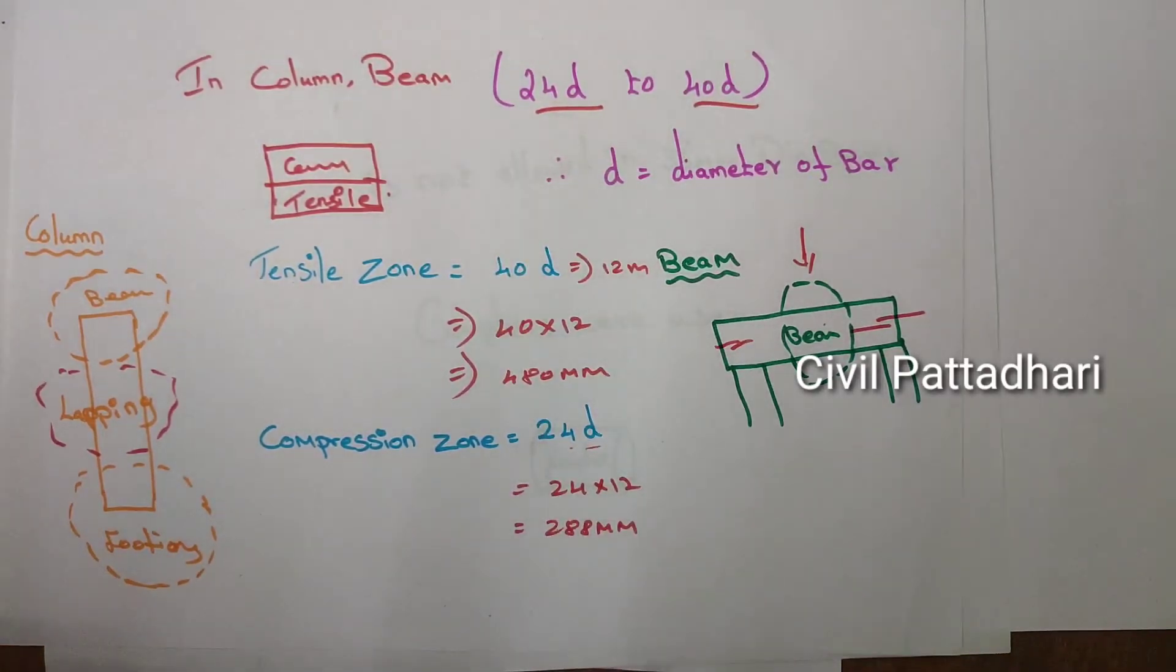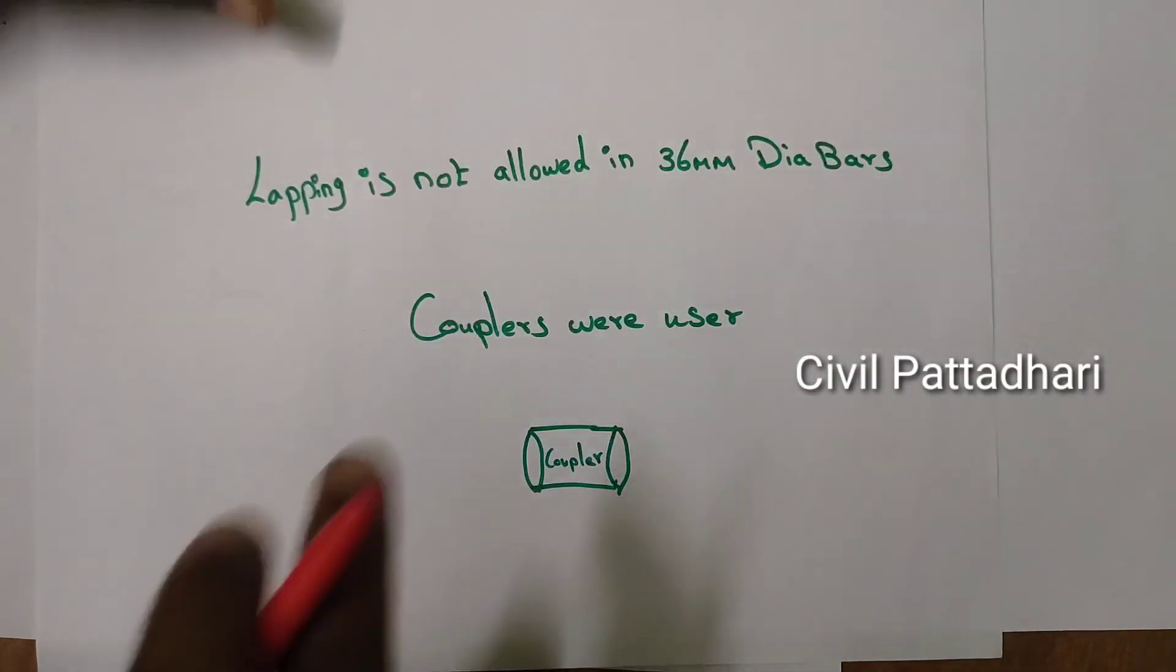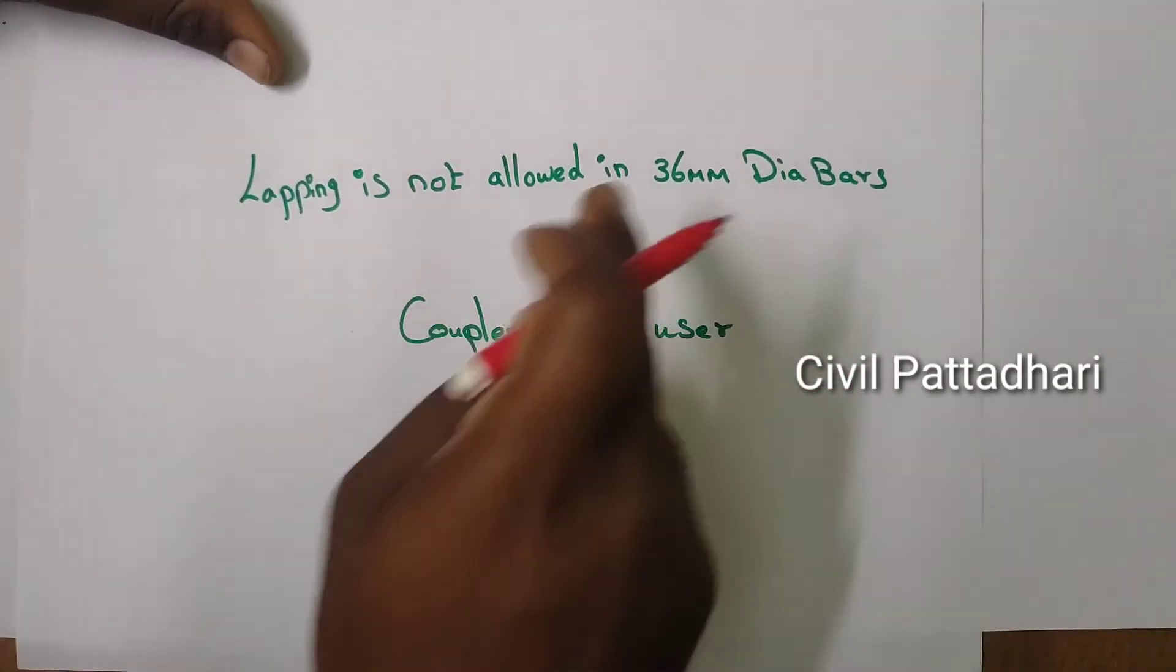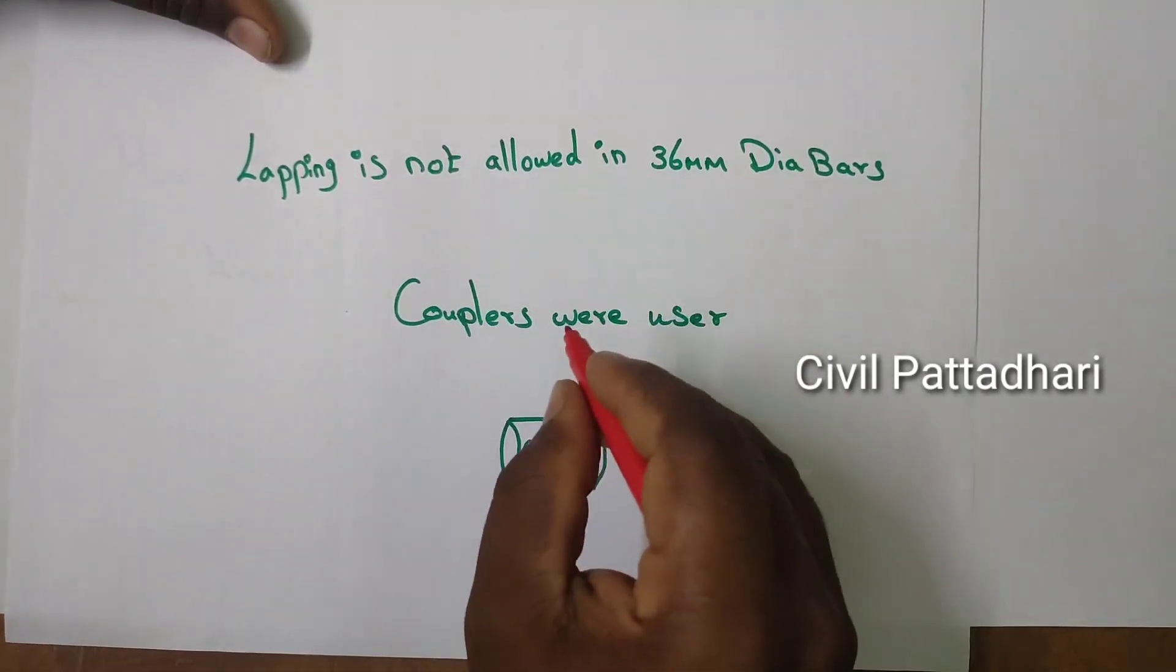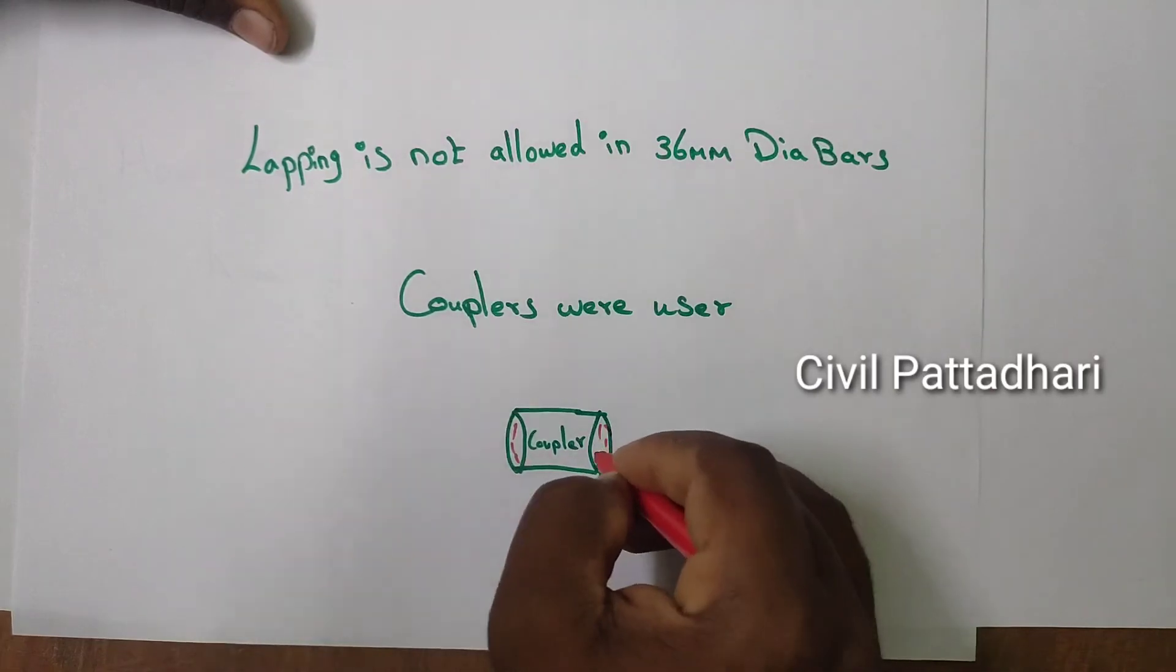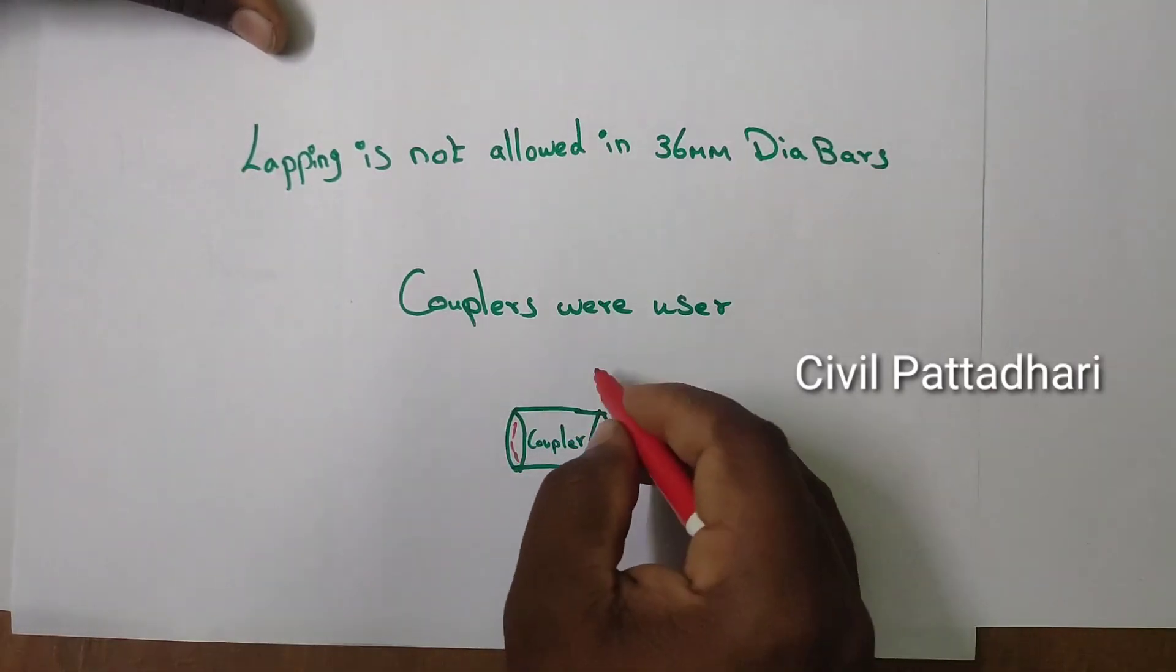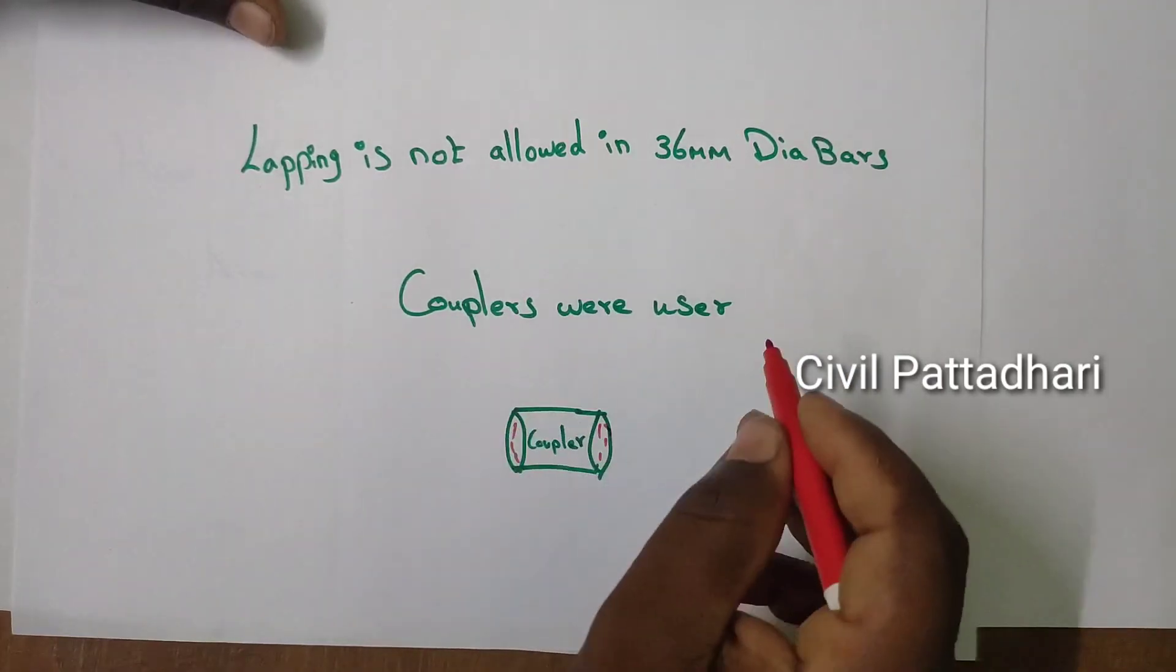The lapping will be allowed for bars of diameter 36 mm. Where above 36 mm, the couplers were used. The coupler is simple: on two sides the thread will be provided and the bar will be made into a thread portion, that is the nut and bolt section. Where the couplers were used for the linking of the bar, or to weld the two rods instead of binding it together.